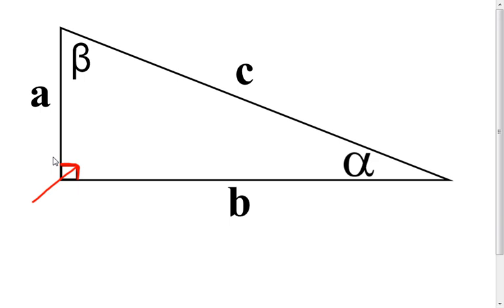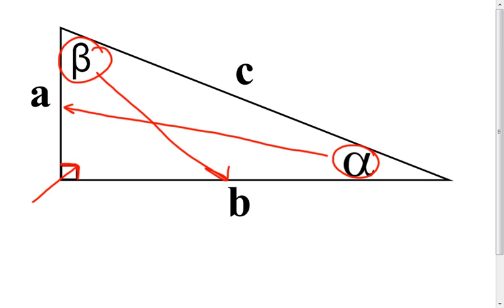What I want you to notice is that angle alpha is opposite of side A, and angle beta is opposite of side B. That has to stay that way. So if you switch A and B around, then your alpha and your beta need to be switched as well.